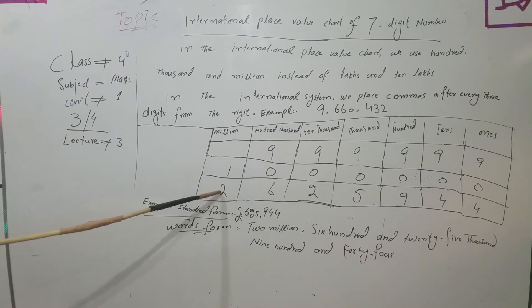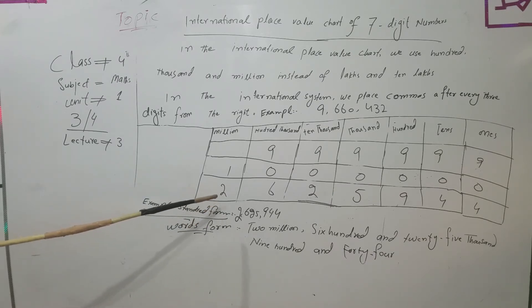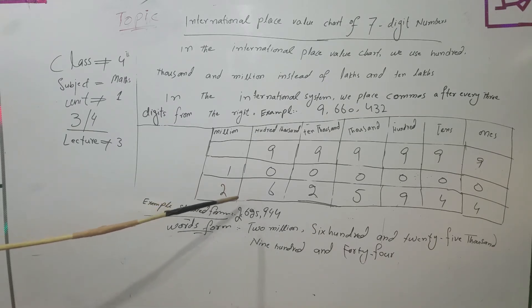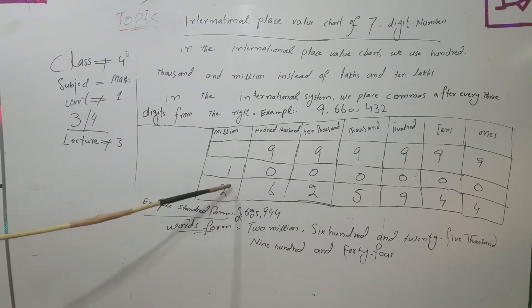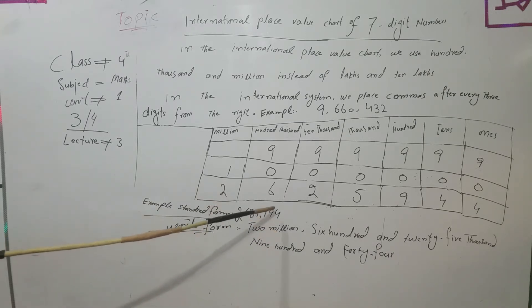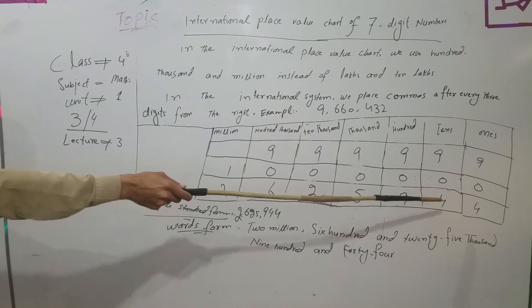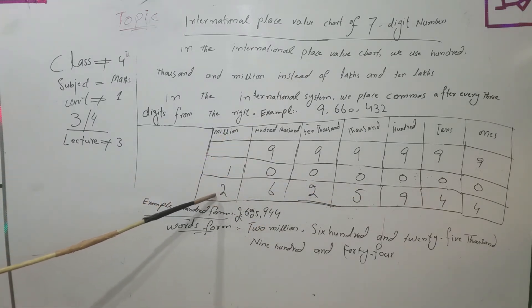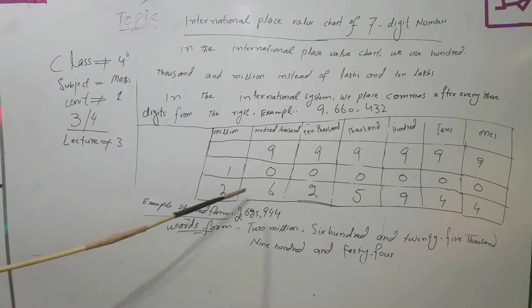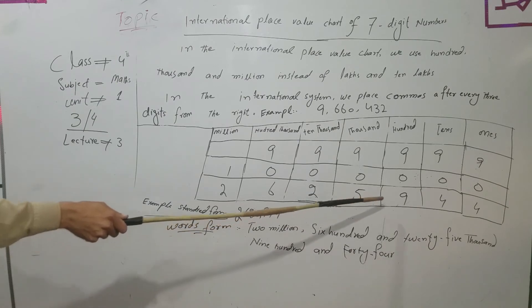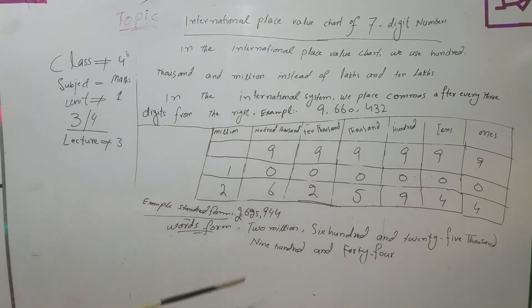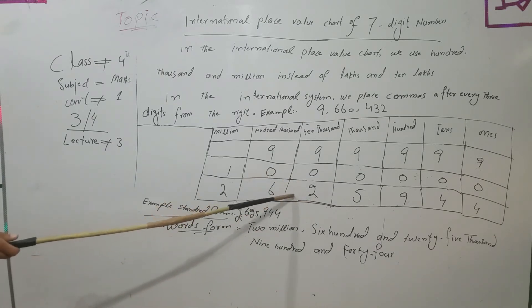In the Pakistani place value system, two in the next place equals twenty lakhs, and in the International system that equals two million. So in words form for the Pakistani system we write: twenty six lakh twenty five thousand nine hundred and forty four. For the International system we write: two million six hundred twenty five thousand nine hundred and forty four.